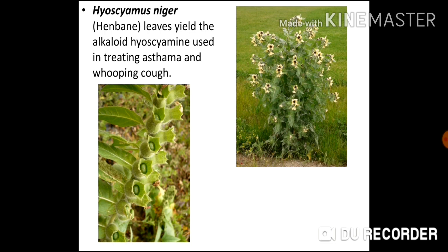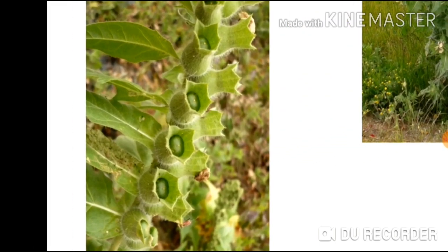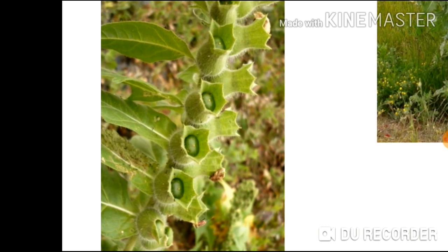The next medicinal plant is Hyoscyamus niger, commonly called henbane. Leaves yield the alkaloid hyoscyamine, which is used in treating asthma and whooping cough — a highly contagious respiratory tract infection. The fruits of Hyoscyamus niger also show the persistent calyx mentioned in the previous lecture.